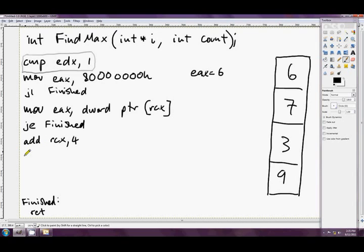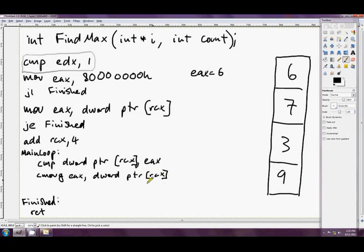Alrighty, so now we're up to our loop. How's our loop going to work? I'll just call it main loop, and all we really want to do is compare the next value to the highest so far. So what we might do is something like comp dword ptr rcx and eax with a square bracket there. Okay, so we've compared the next value, this will be the 7 just here, with the 6 that we've got just here. And cmov g eax dword ptr rcx. Okay, we want to conditionally move this 7 into eax if and only if it's greater than the value that eax currently has. Nice and easy.